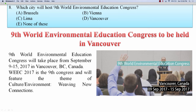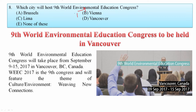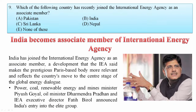Which city will host the ninth World Environmental Education Congress? The ninth World Environmental Education Congress will take place from September 9 to 15, 2017 in Vancouver, Canada. Your answer is Vancouver. The theme of this year's congress is 'Culture, Environment: Weaving New Connections'.